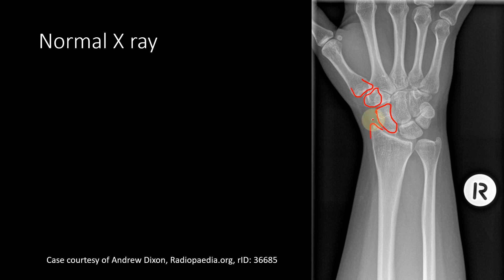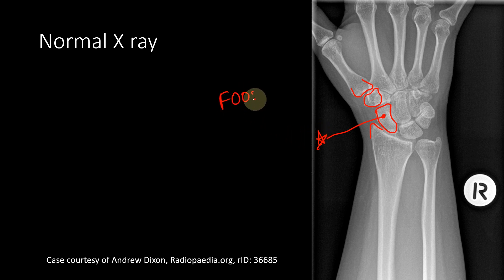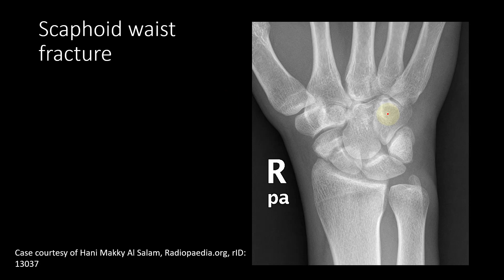The scaphoid is the most important structure in the anatomical snuffbox because it is one of the most notorious carpal bones to undergo fracture. A very common mechanism is a fall on the outstretched hand — as a reflex, you extend your hand when you fall. When this happens, the weight is borne on the scaphoid and it can undergo fracture.